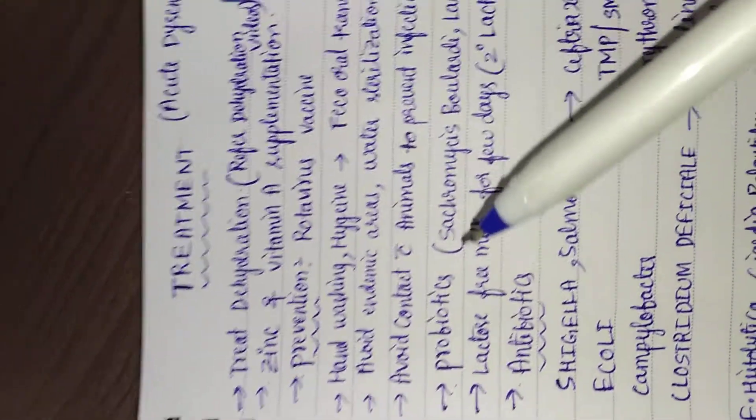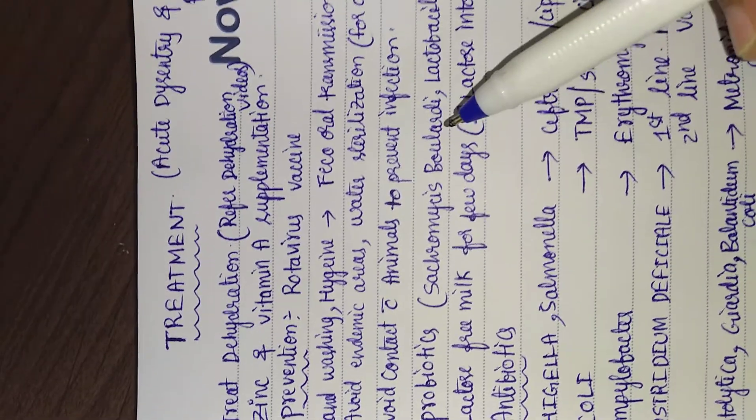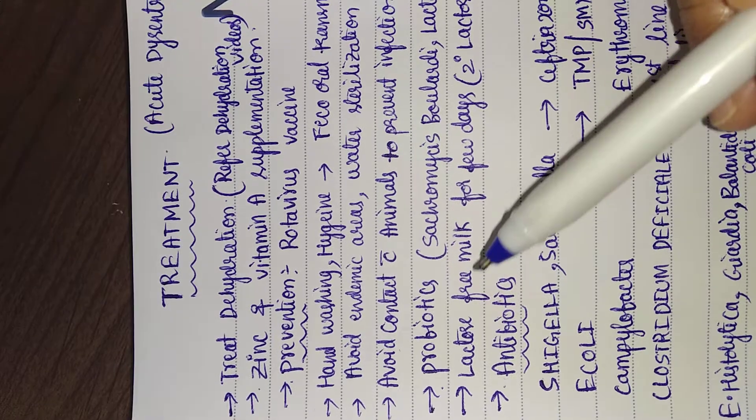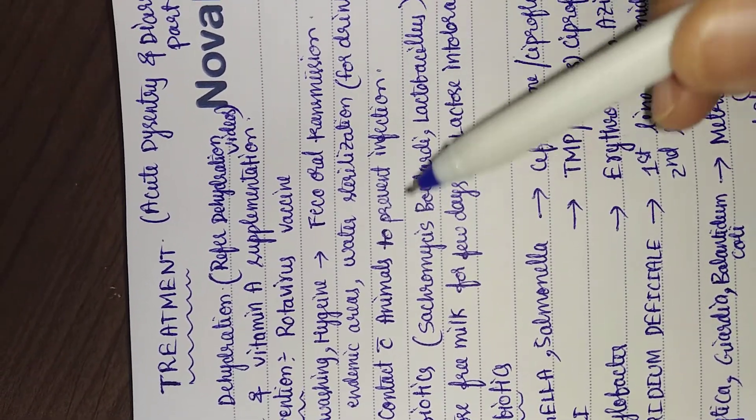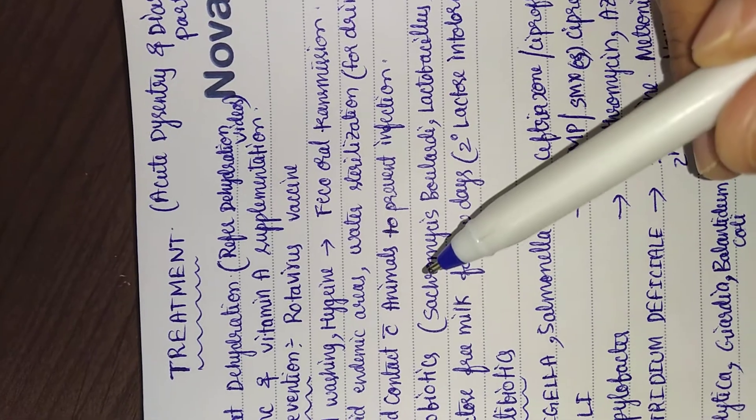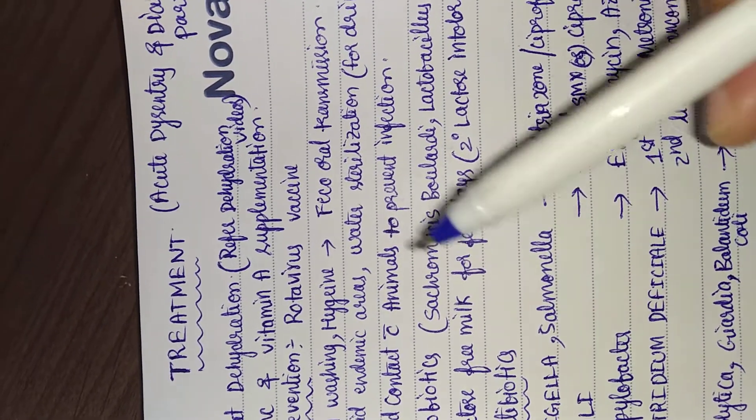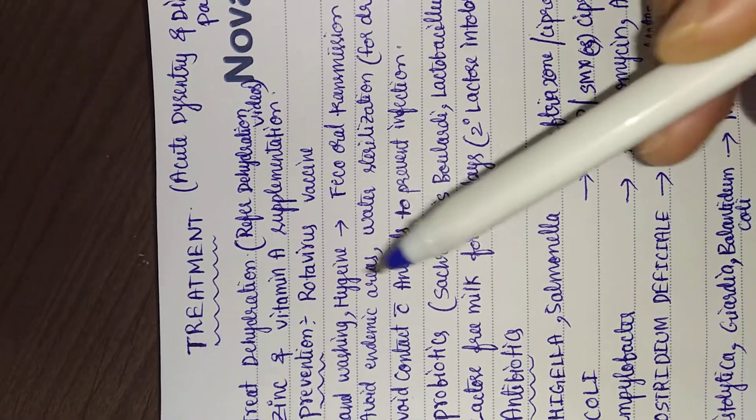Probiotics - so this is about prevention. Probiotics like Saccharomyces boulardii and Lactobacillus are also effective. These help in improving the normal gut flora and restoring the normal gut environment, thus preventing the proliferation of abnormal infective organisms.